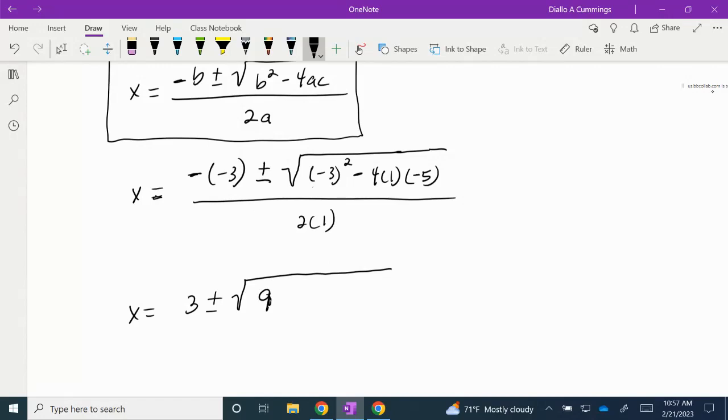Then we're going to multiply from left to right. So we have -4 times 1, which is -4. -4 times -5 is a positive 20, all divided by 2.